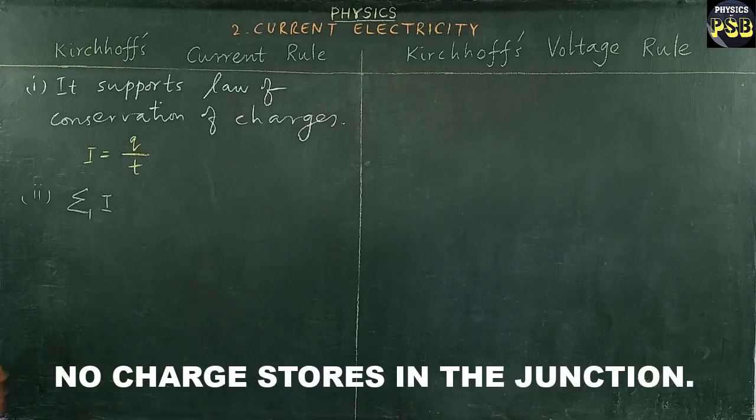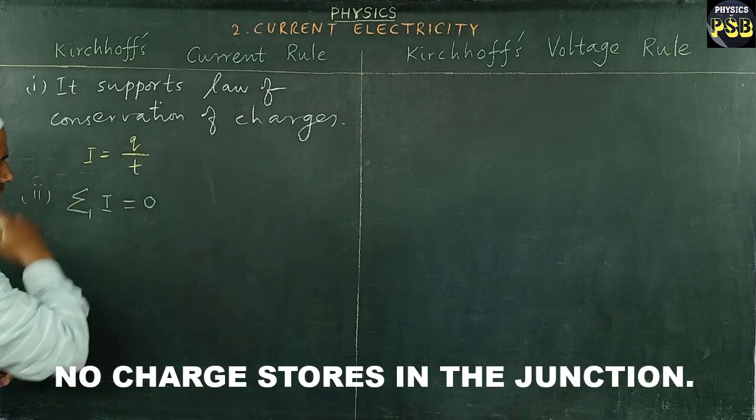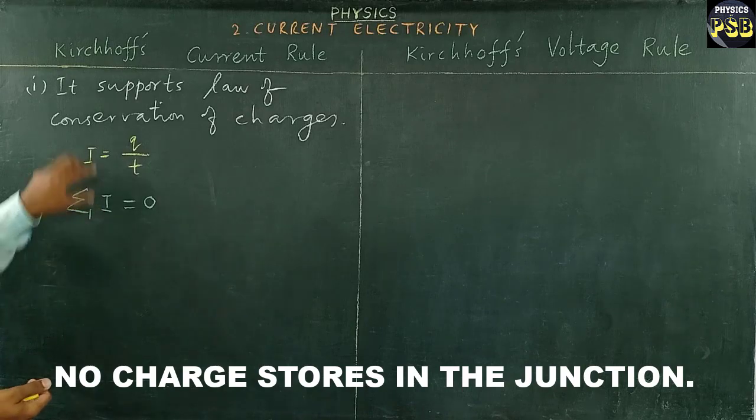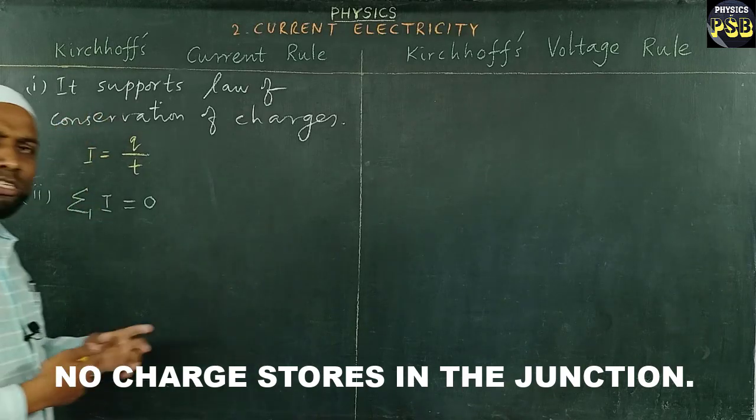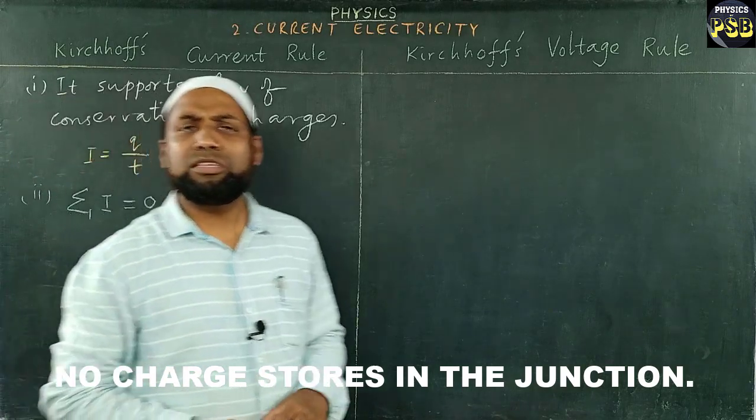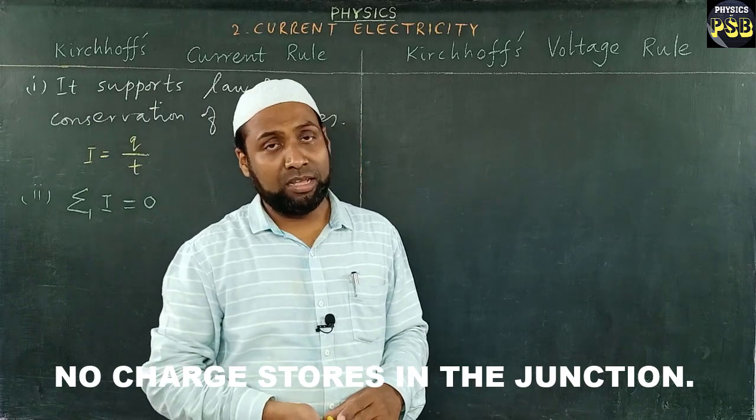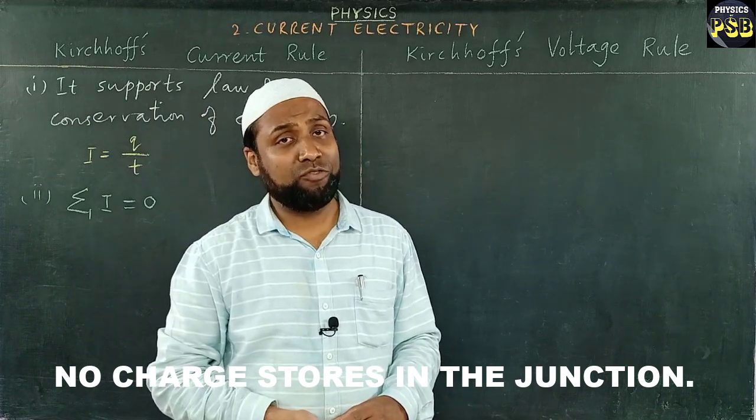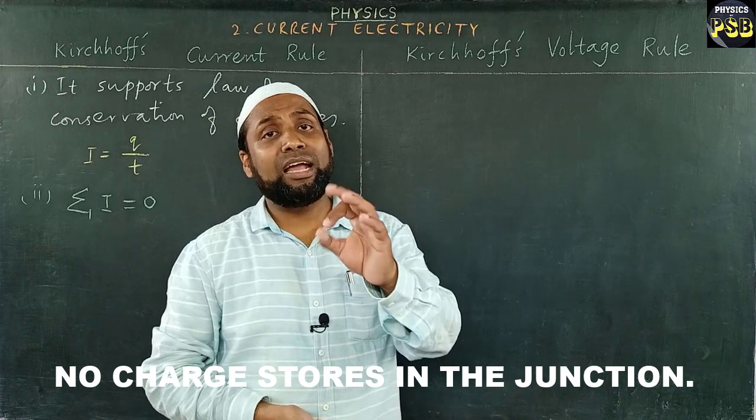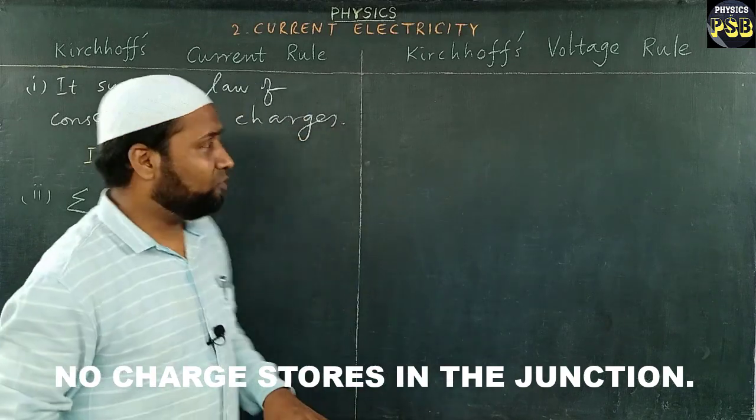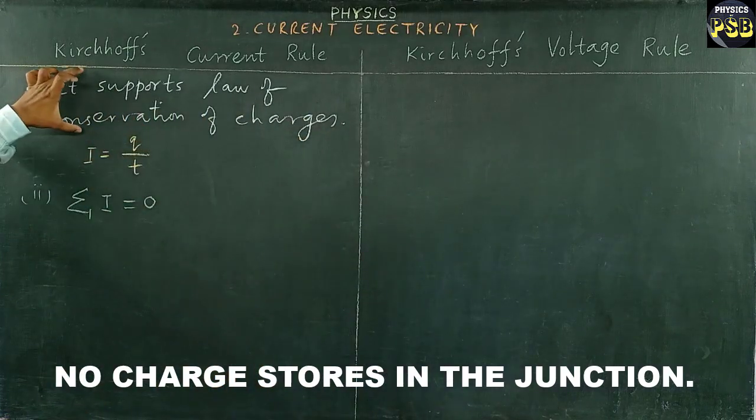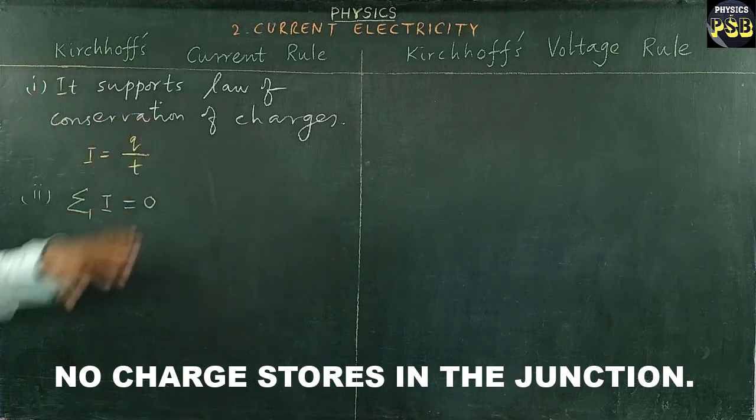Sum of current meeting at a junction is taken as zero, and the current depends on the charge. If there is no accumulator present in a circuit, then the number of charges flowing in the circuit remains constant. So in that way we can say that it supports the law of conservation of charge.